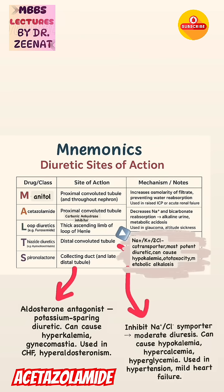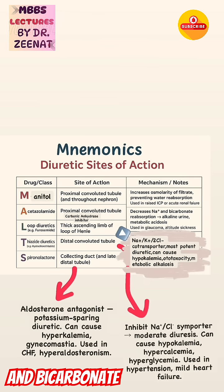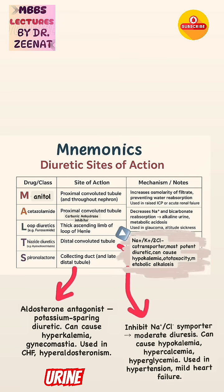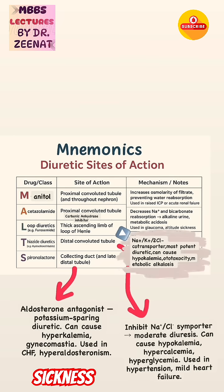Acetazolamide is a carbonic anhydrase inhibitor. It decreases sodium and bicarbonate reabsorption, resulting in alkaline urine and metabolic acidosis. It is used in glaucoma and altitude sickness.